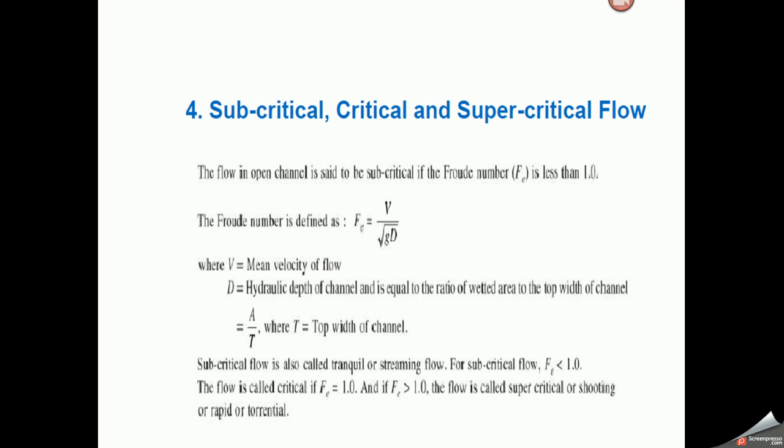Subcritical, critical, and supercritical flow are classified by the Froude number. Froude number Fe equals V divided by the square root of (g times D), where V is the mean velocity of flow, D is the hydraulic depth of the channel equal to the ratio of wetted area to top width (A/T). If Fe is less than 1, the flow is subcritical — also called tranquil or streaming flow. If Fe equals 1, the flow is critical. If Fe is greater than 1, the flow is supercritical, also called shooting, rapid, or torrential flow.